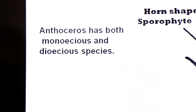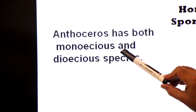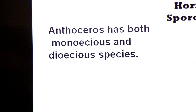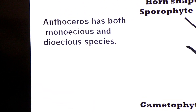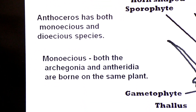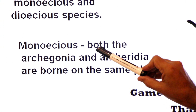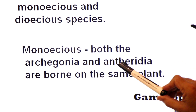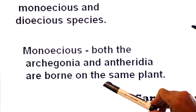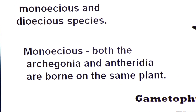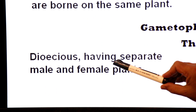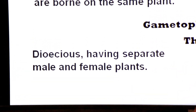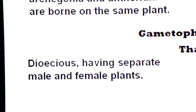Anthoceros has both monoecious and dioecious species. Monoecious means both archegonia and antheridia are borne on the same plant. Dioecious means the sexes are separated — male and female plants are separate.